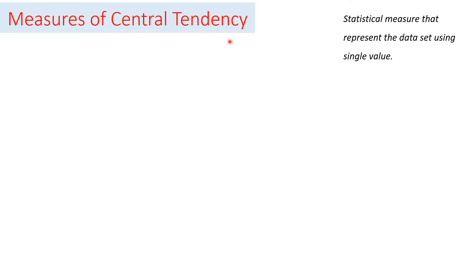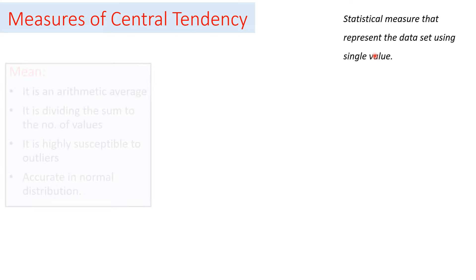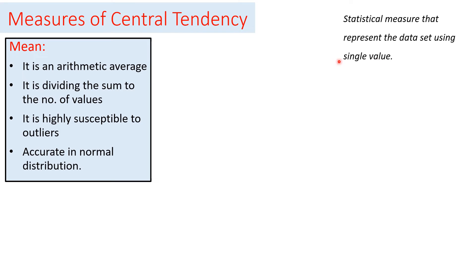Moving to measures of central tendency: central tendency is a statistical measure that represents the whole data set using a single value, such as mean, median, and mode. The mean is a mathematical or arithmetic average, calculated by dividing the sum of all values by the number of values. It is highly susceptible to outliers — that is, it is highly affected by extreme values — and it is an accurate representative of the data set only for normally distributed data.